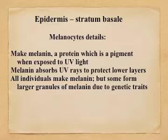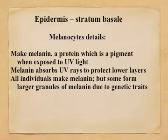Why would your body make melanin? Melanin absorbs the UV rays, so this protects the lower layers of your skin. UV light shines through all of those epidermal cells above the basal layer and the melanocytes, and then the melanocytes go to work making melanin. It's self-defensive — it's trying to absorb the UV rays so they don't penetrate deeper into your dermis where they could really do some damage. All individuals, except perhaps albinos, make melanin. Some individuals form larger granules of melanin due to their genetic traits, meaning some humans have darker skin even before sun exposure, because of their genetic ancestry.